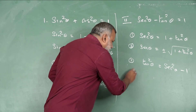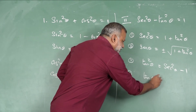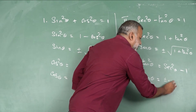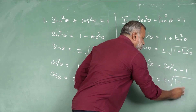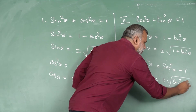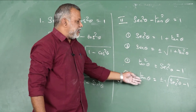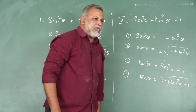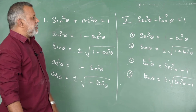The fourth sub-result: tan θ = ±√(sec²θ − 1). This completes the sub-results for the second identity.